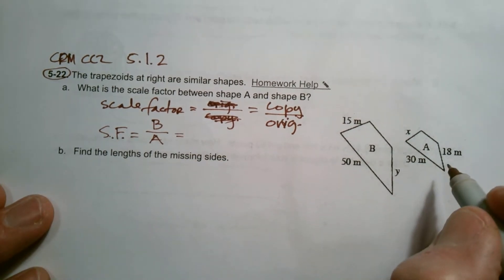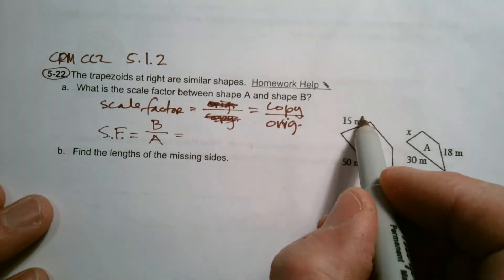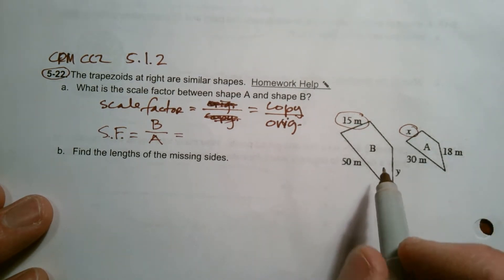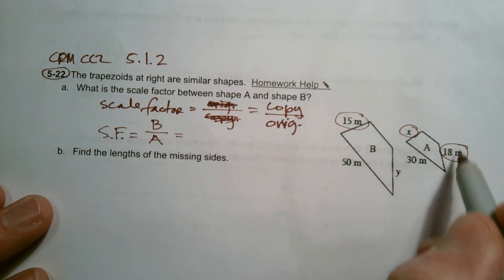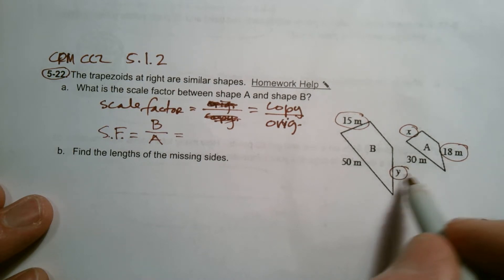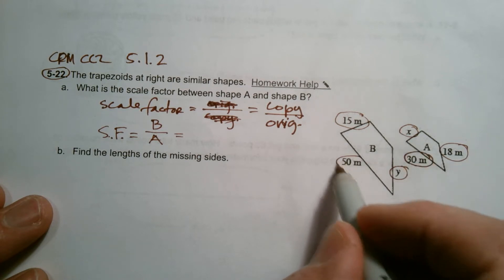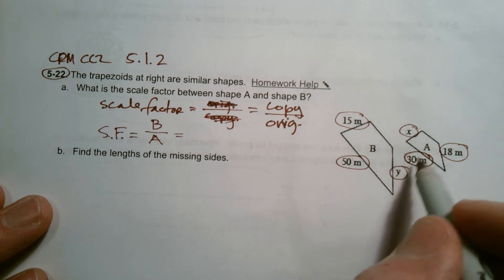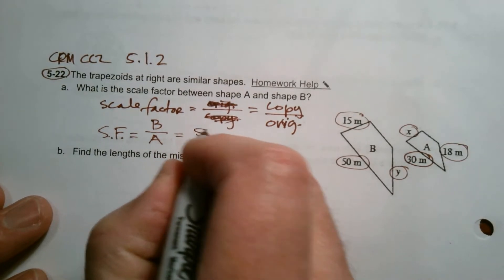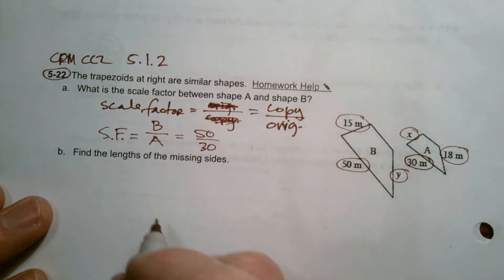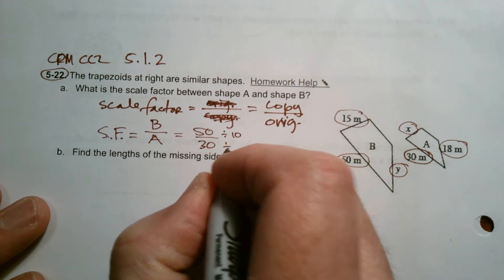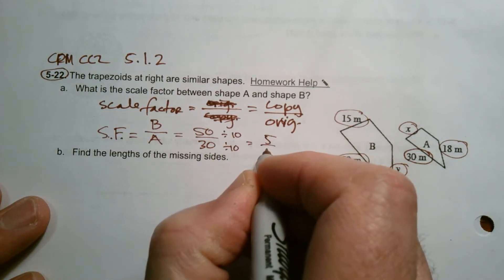So we look at a corresponding side. I've got 15 and X are corresponding, but X doesn't give me anything because that's missing right now. I've got this 18 and Y are corresponding, but again I don't know what Y is. But here I have, these are listed that 30 and 50, those are corresponding sides. They're the same side of the shape, just one is larger than the other. So my scale factor, if I simplify that by dividing top and bottom by 10, my scale factor would be 5/3.